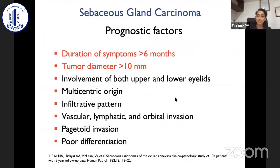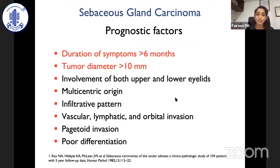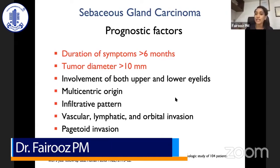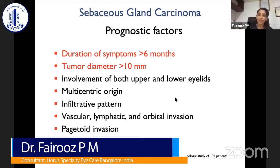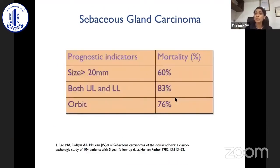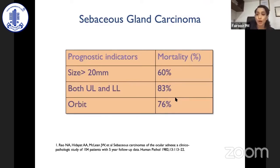This was the first publication, way back in the early 1980s by Dr. Rao, who published the prognostic factors related to sebaceous gland carcinoma. There are eight of them, depending upon the duration of symptoms, the tumor diameter, infiltrative pattern, multicentric origin, and histopathologically being poorly differentiated. The paper also spoke about certain features which led to poor prognosis for mortality — when the size is more than 20 millimeters, involving both upper and lower lid, and also with orbital extension.